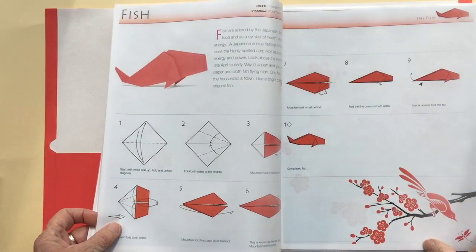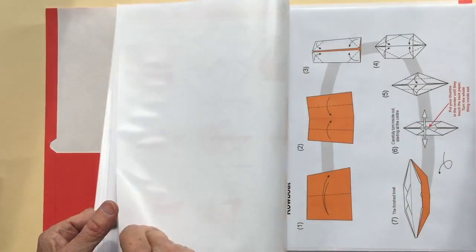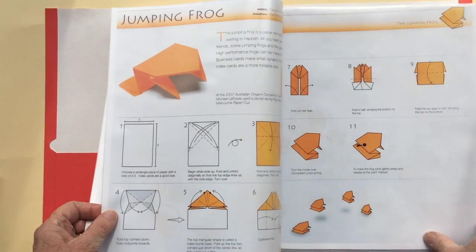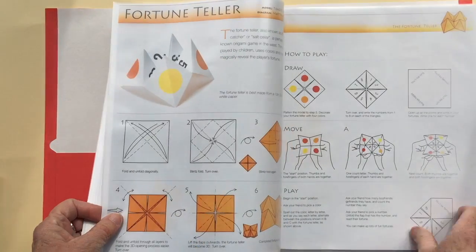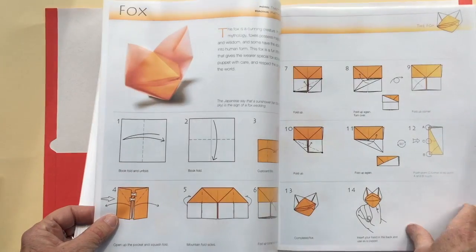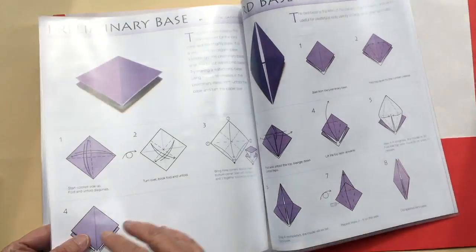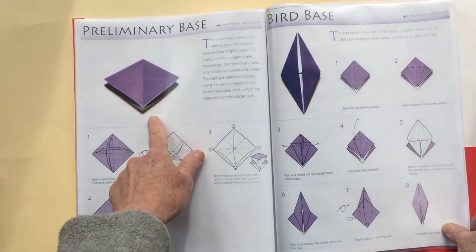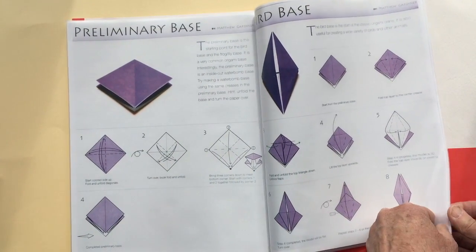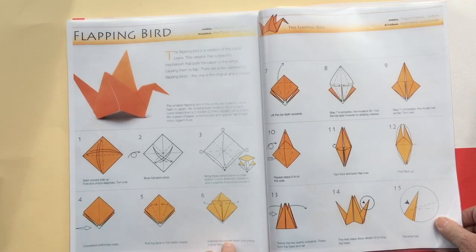We've included a fish, cup, swan, boat, jumping frog, fortune teller, fox puppet, box, cat puppet, and bases that will help you make something like a flapping bird.